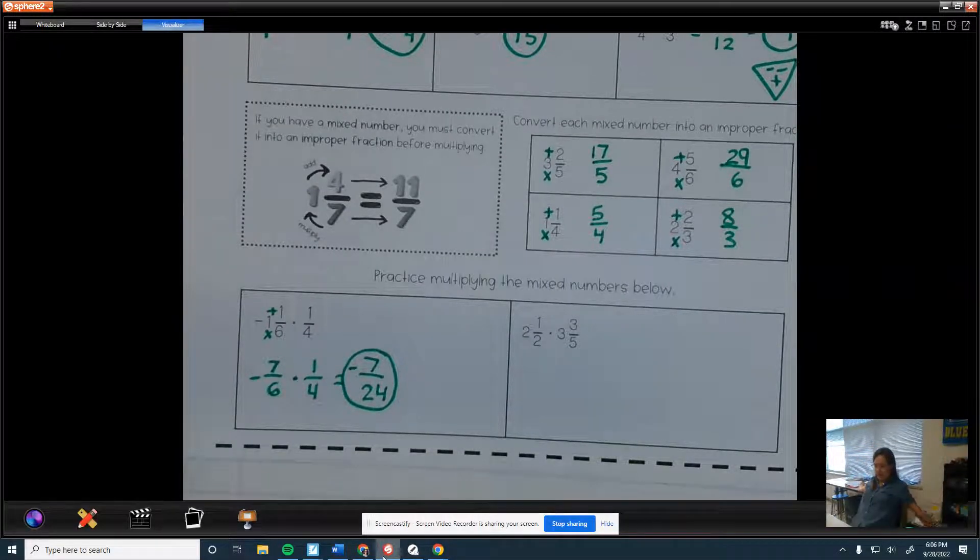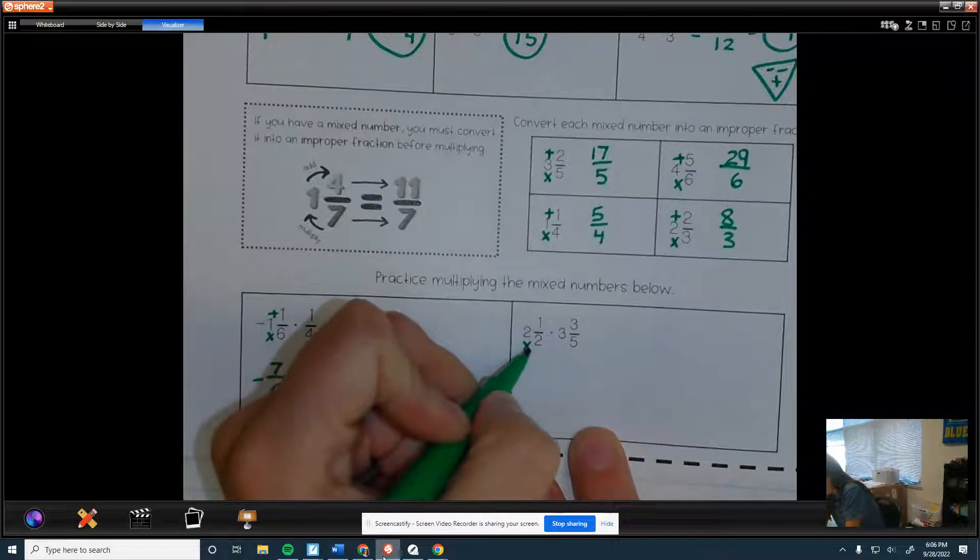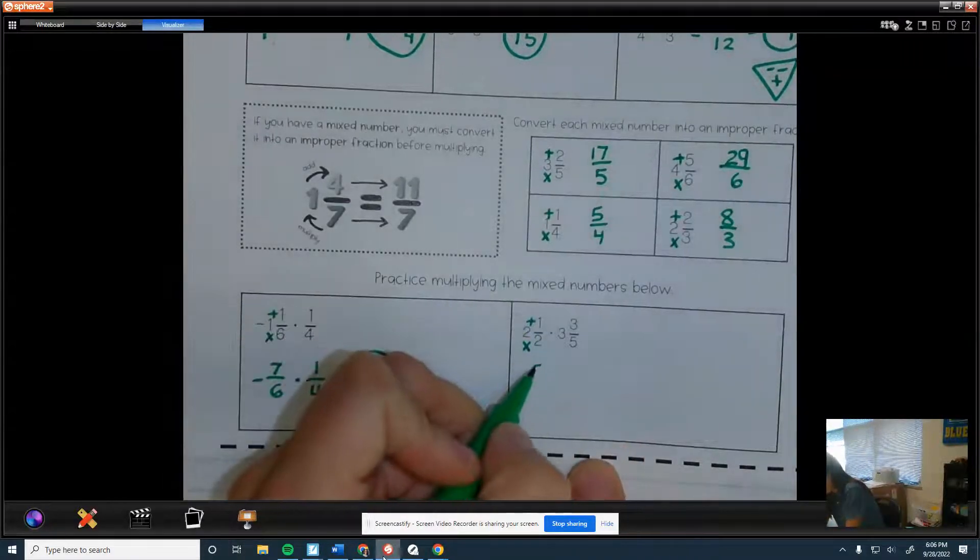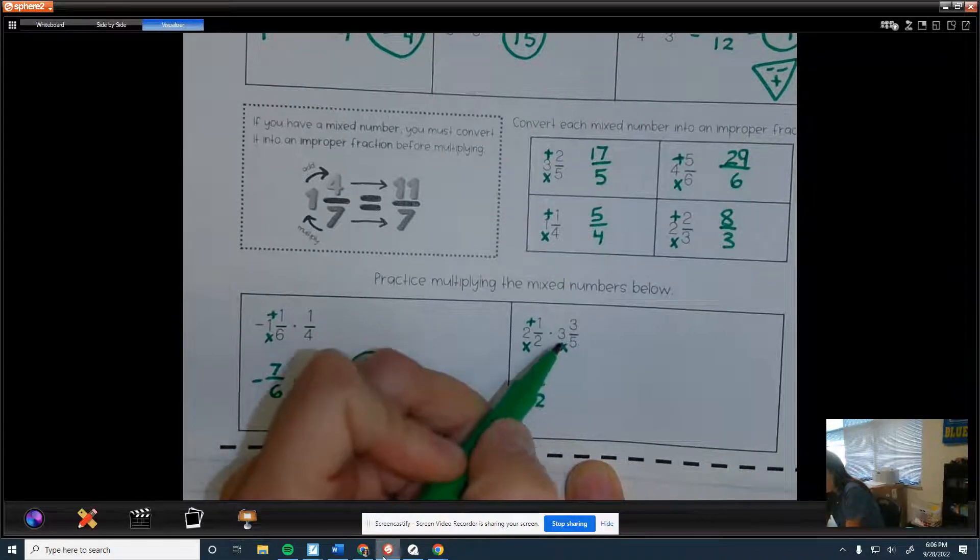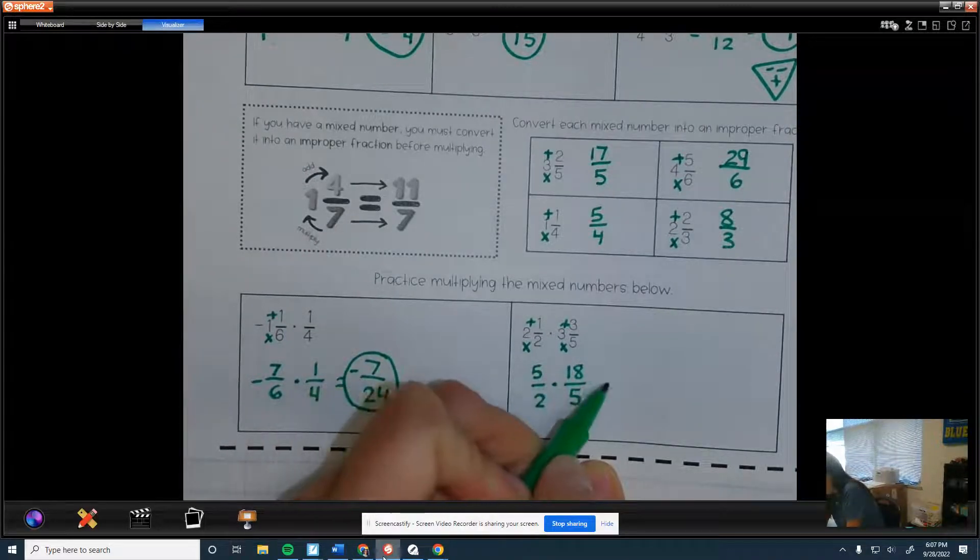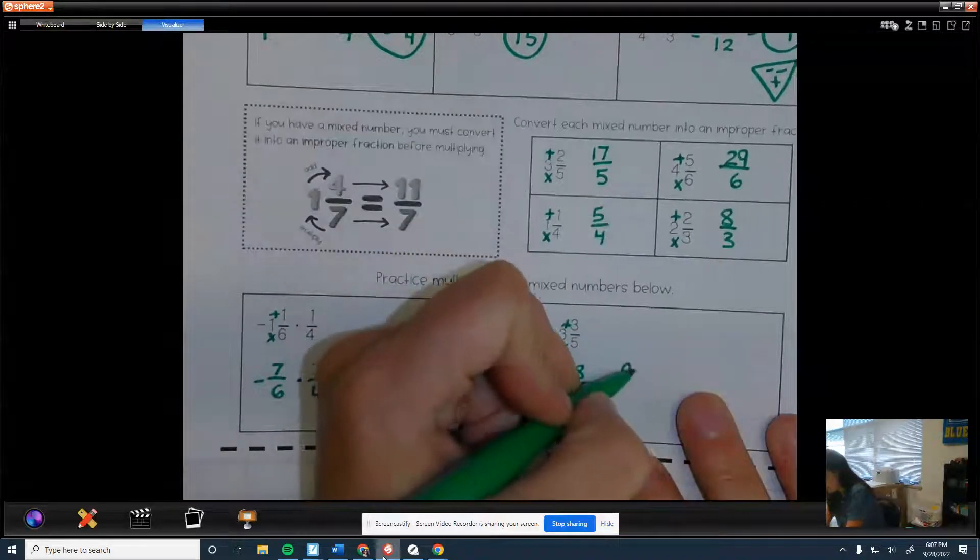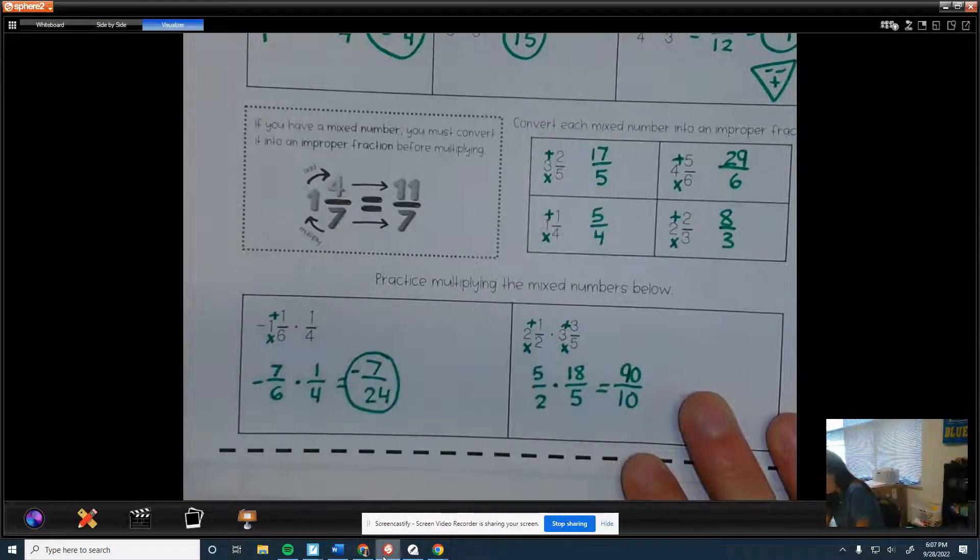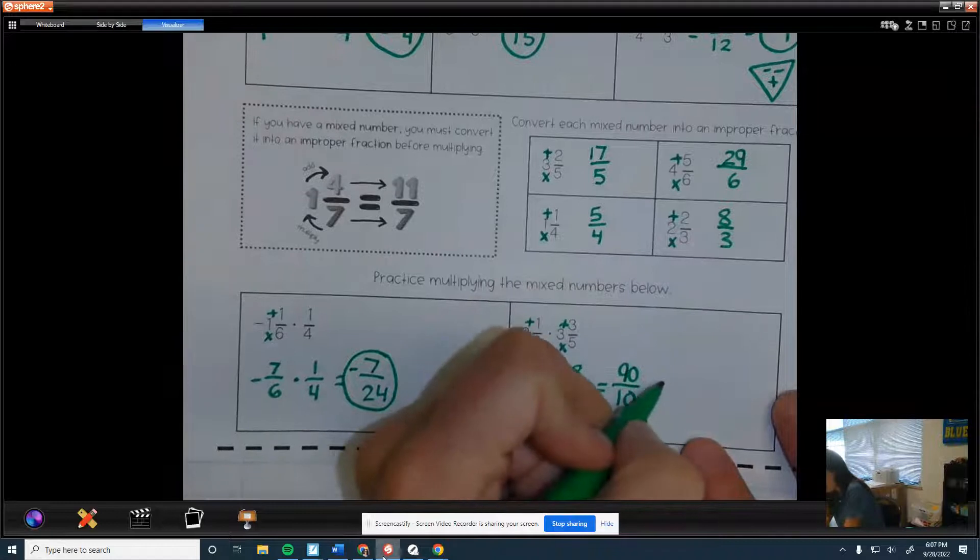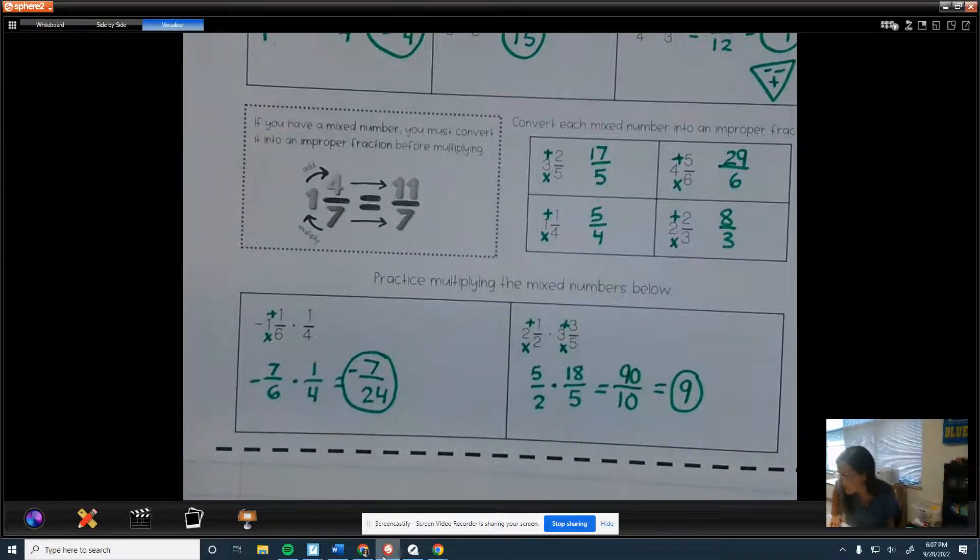Alright, this one, we got two mixed numbers. So we need to turn both of these into improper fractions. So two times two is four, plus one is 5/2. Then five times three is 15, plus three is 18/5. And then we can multiply. So 18 times five, I feel like I did that the other day. I think it's 90. I'm going to trust myself on that one. Two times five is 10. So then 90 divided by 10 is just nine. If I got the 90 part wrong, forgive me, and you can solve it correctly. But I think I'm right.